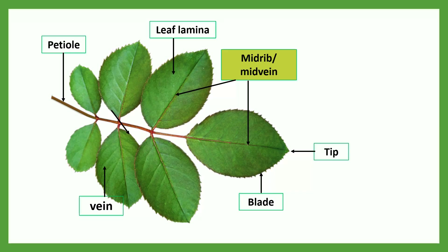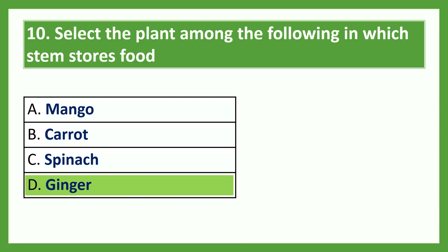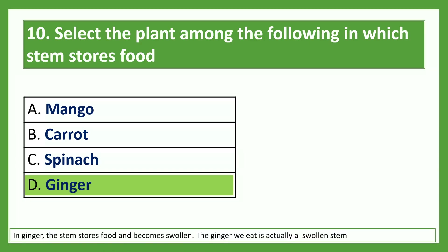Select the plant among the following in which the stem stores food. Option A: mango; Option B: carrot; Option C: spinach; Option D: ginger. The answer is Option D, ginger. In ginger, the stem stores food and becomes swollen. The ginger we eat is actually a swollen stem.